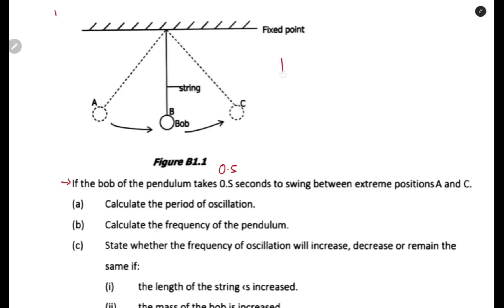So what is the period of oscillation? The period is the time taken for one complete oscillation, or the time taken for the bob to move from point A to B to C and back to A. To find the period, we use the formula: Period = time taken divided by number of oscillations.